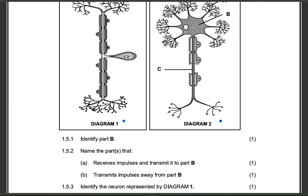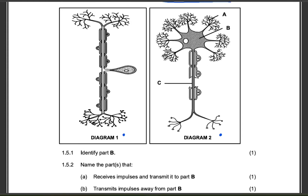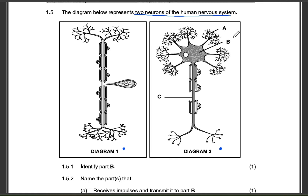The first question is asking you to identify part B. Let's look at part B — let's scroll up. There is part B. You need to identify part B. That is very easy. Part B is the cell body.